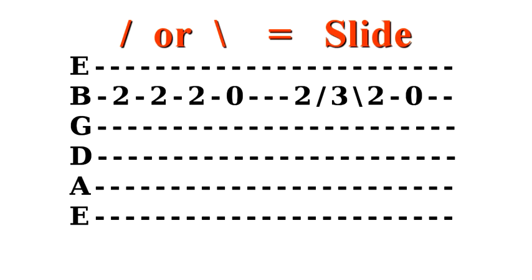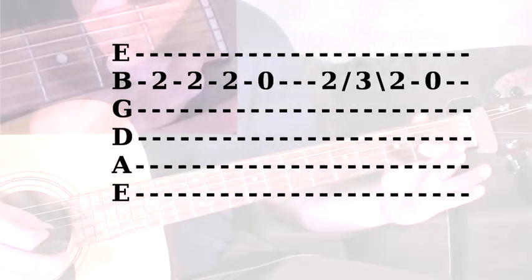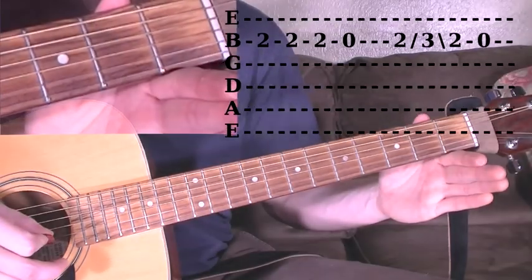In the example shown, we will slide up to the third fret from the second fret, and then we will slide right back down to the second fret. So, just like when we hammered on and pulled off on our last example, we will hear three notes when we only pick the first note. Here is how this tab will sound.